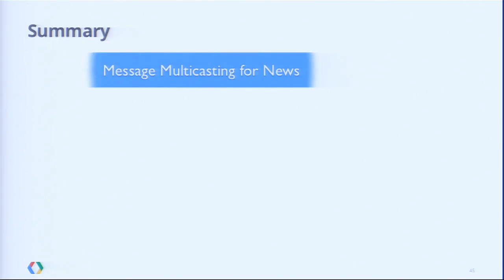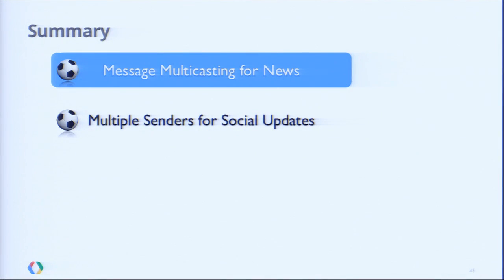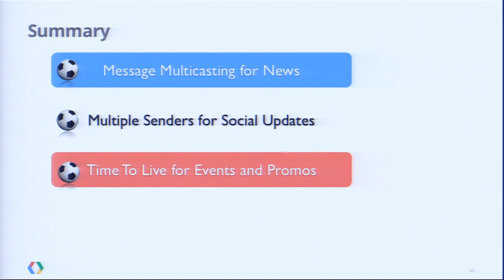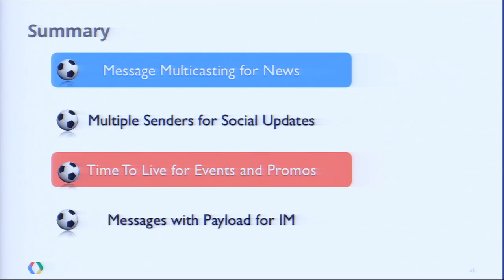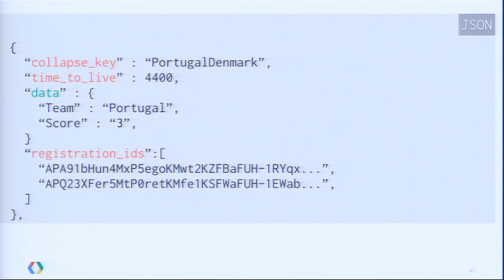Let's pause and check what we've seen so far. We've been delivering news updates with one HTTP request to up to 1,000 devices using the multicasting API. We've been leveraging third-party services by adding them as authorized senders. We've been delivering time-sensitive messages using the time-to-live parameter. And we've added instant messaging functionality using the basic GCM messaging API. We can combine these for score updates: use the collapse key so only the latest score matters, time-to-live so we skip messages if the match is already over, and multicasting to simplify delivery.